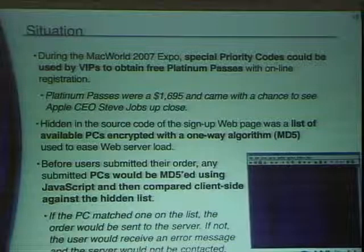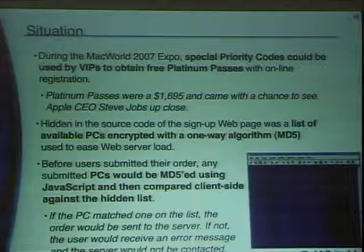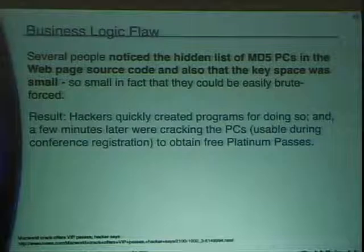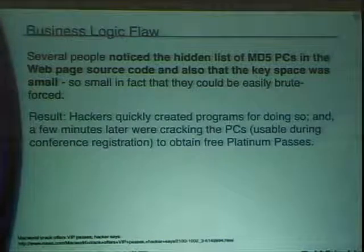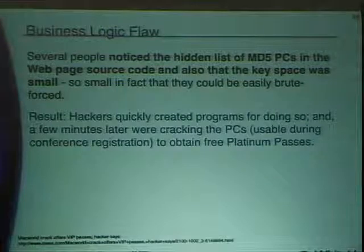A friend of mine in San Francisco decided he wanted to get into the expo. The priority codes were five characters in length — digits and uppercase characters. He created a 10-line C program, cracked it, found the priority code, registered himself for a platinum pass, and got into the conference. After the conference, he told the Macworld Expo organizers what he had done and they said thank you and would take care of the issue. Forensics revealed he wasn't the only one who found it — just the only one who told them. He actually did the exact same hack the following year.